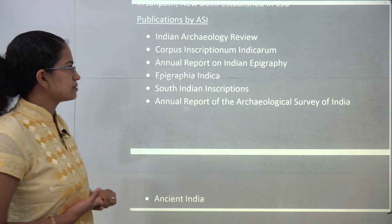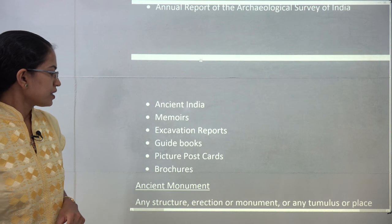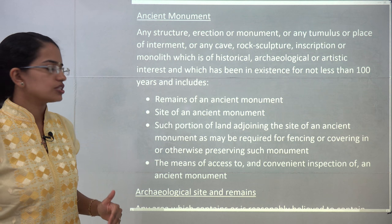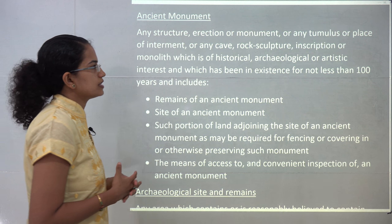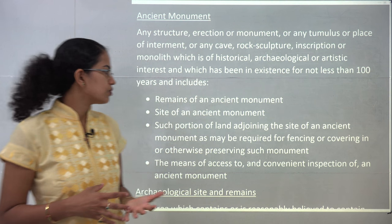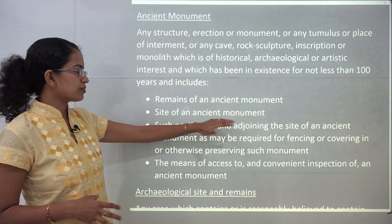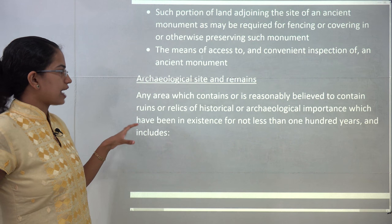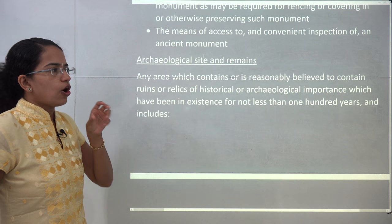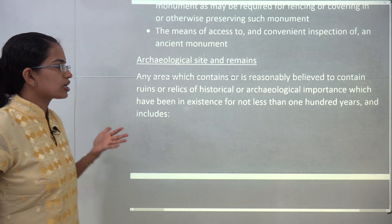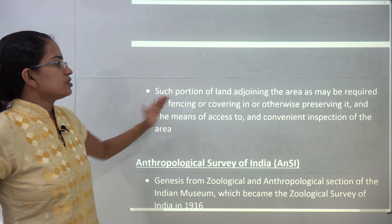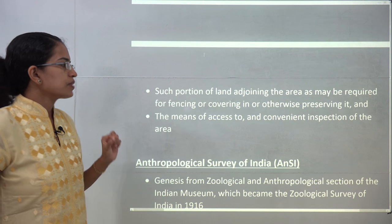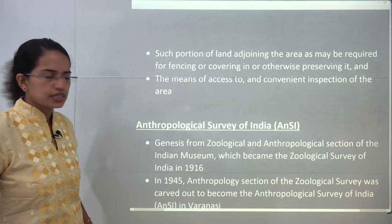ASI also publishes various southern Indian inscriptions and annual reports on Indian epigraphy. There is a distinction between ancient monuments and archaeological sites. Ancient monuments are those monuments or sculptures not less than 100 years old, and include the remains of any ancient monument, the site, and the adjoining land where inspection can be carried out. An archaeological site is any area of historical or archaeological importance for not less than 100 years, covered by fencing or otherwise, meant for preservation under archaeology and open to inspection.